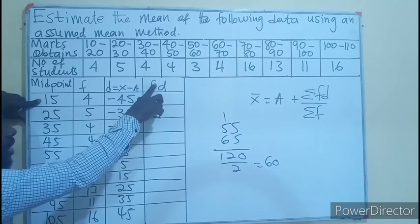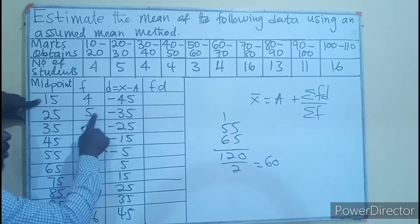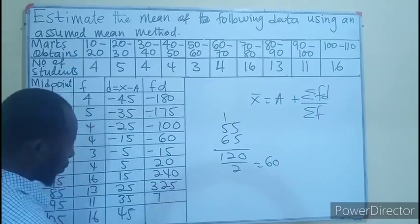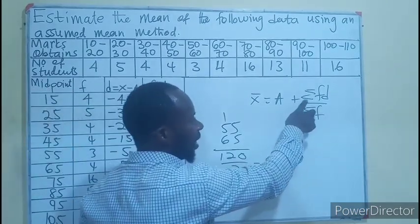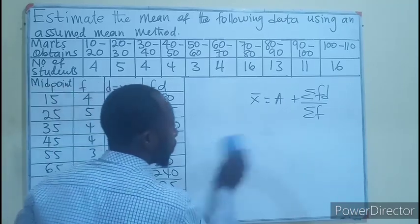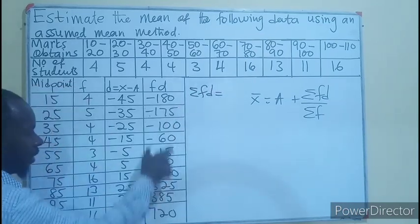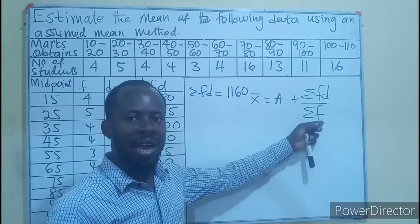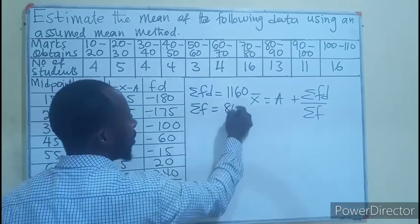Now we multiply the frequency times d, the values we have here. So 4 times this, then you multiply them in order. For us to find the sigma fD, we add all these values with the negative and the positive together. If I add my sigma fD, that is adding all these values, I'll be having 1160. I also need the sigma f, so adding all these frequency values gives you 80.